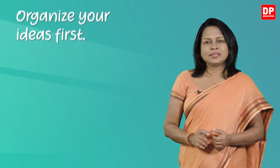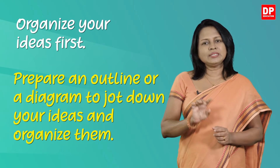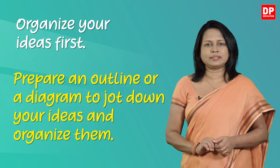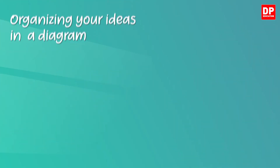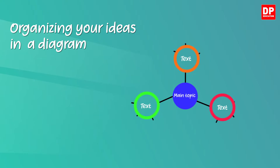The first thing you need to do is this: in order to write a successful essay, you must organize your ideas first. In order to do that, use either an outline or a diagram to jot down your ideas and organize them. To create a diagram, write your topic in the middle of your page. Draw three to five lines branching off from this topic and write down your main ideas at the ends of these lines.